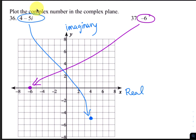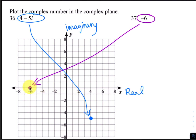For numbers 36 and 37, we want to plot the complex numbers. The horizontal axis becomes the real axis and the vertical axis becomes the imaginary axis. For 4 minus 5i: 4 is the real part and negative 5 is the imaginary part. Starting at the origin, go to the right 4 on the real axis and then down 5 on the imaginary axis. For number 37, we just have a real answer, so we only need to plot the real part, which is negative 6. Starting at the origin, go to the left 6 units.